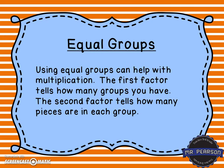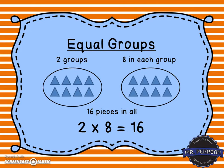The second strategy is equal groups. Using equal groups can help with multiplication. The first factor tells us how many groups we have, and the second factor tells us how many pieces are in each group. In this picture we have two groups of triangles, and in each group there are eight pieces. So two groups of eight equals 16 pieces in all.